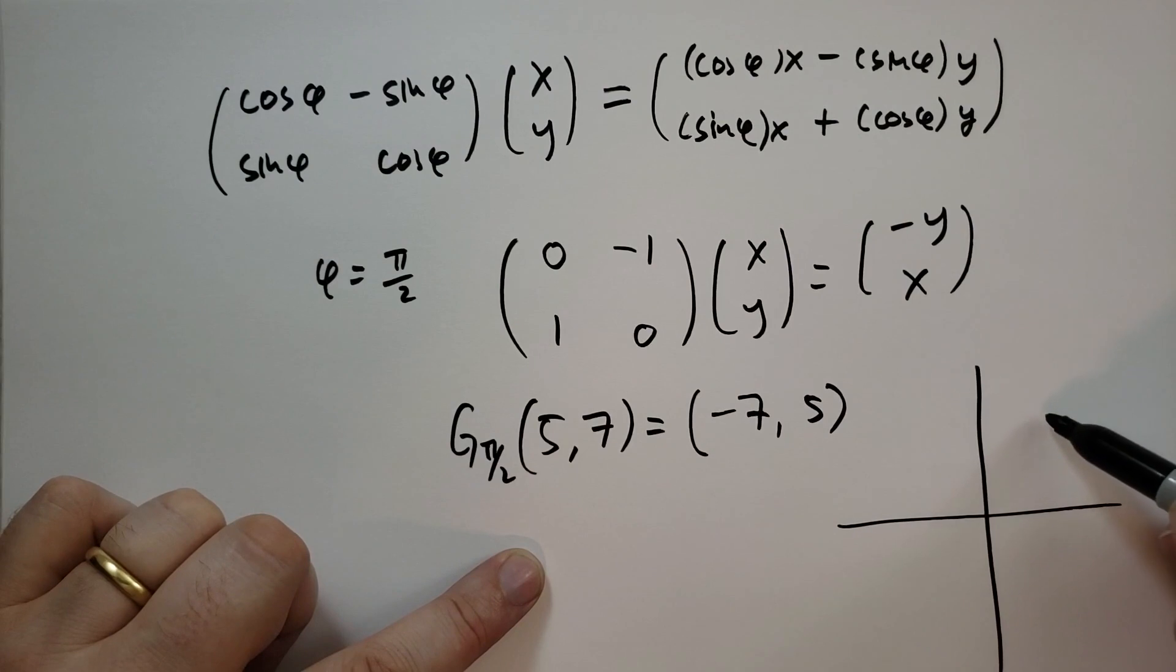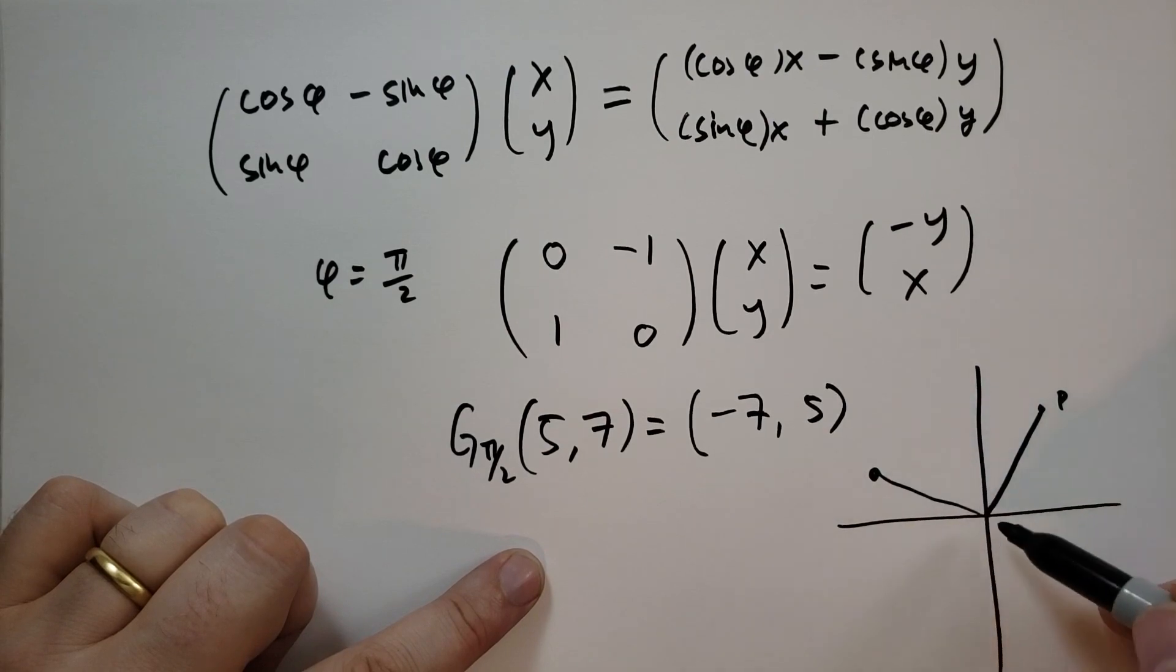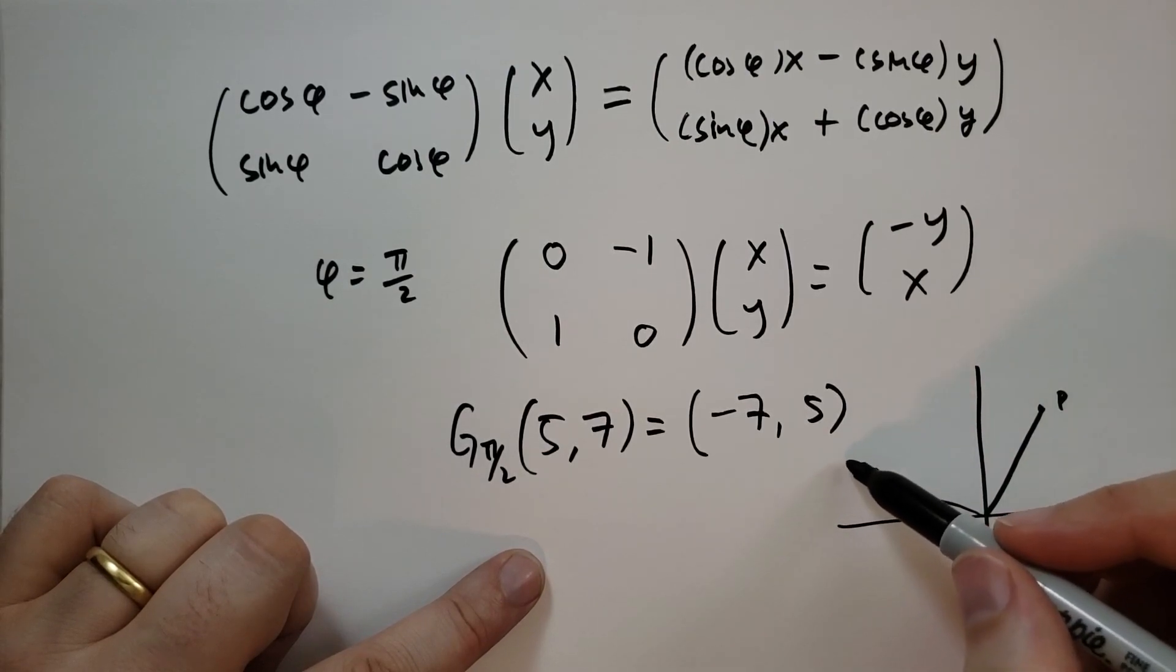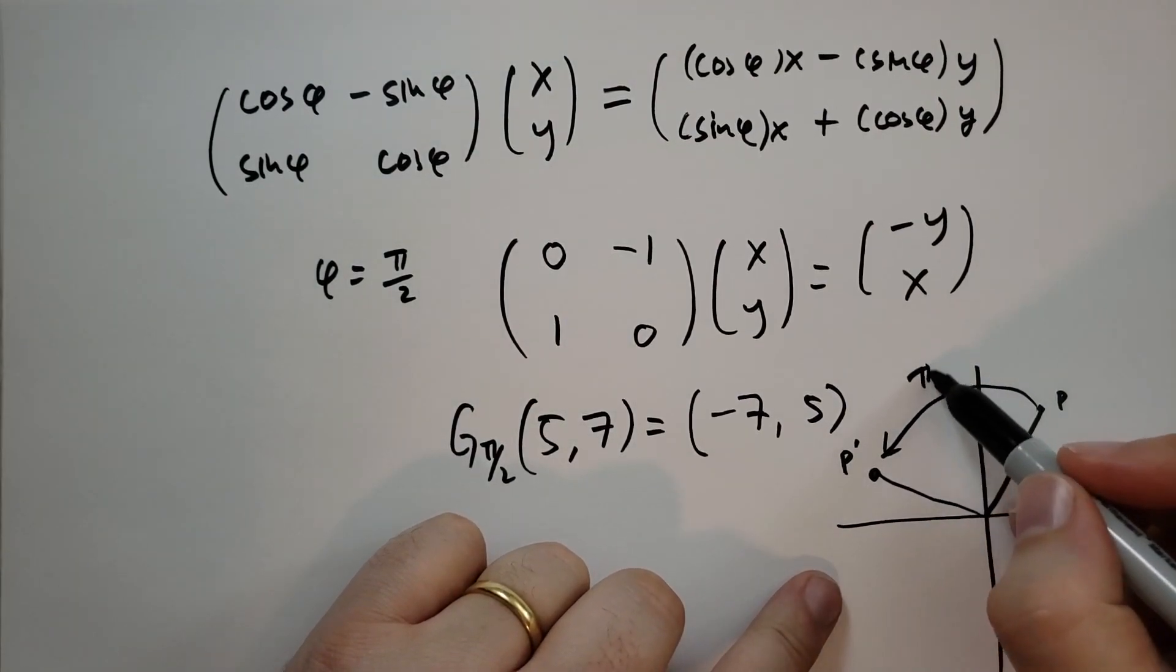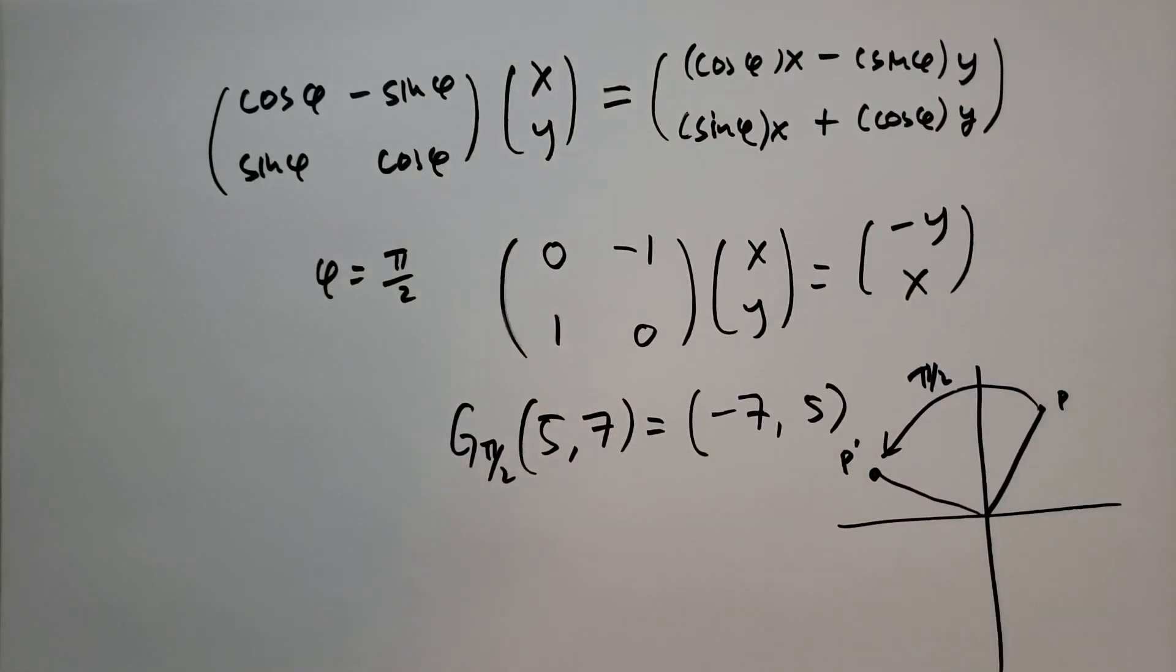So we have five, seven, this is point P, we're going to rotate by 90 degrees, it's going to end up over here, minus seven comma five. That's what's going to happen when it rotates 90 degrees, pi over two degrees. That's all there is to it. It's a little bit simple there.